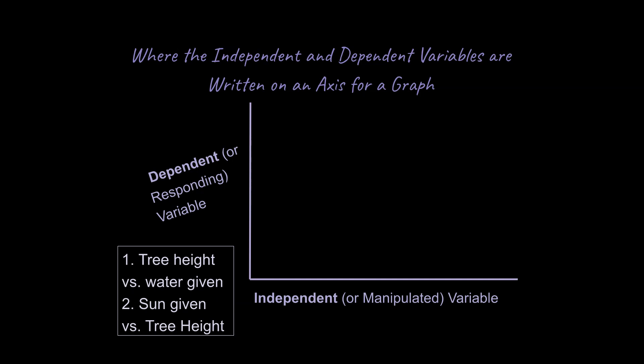Okay, and it turns out that tree height is going to be our dependent or responding variable. So, that should be on the y-axis. And the amount of water given should be our independent variable or manipulated variable. And that should be on the x-axis.